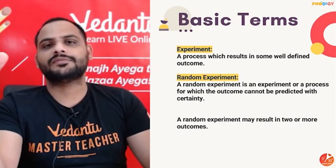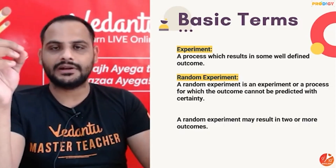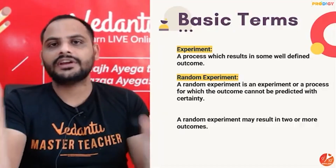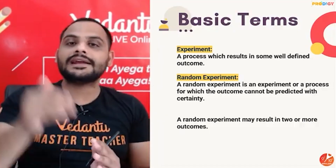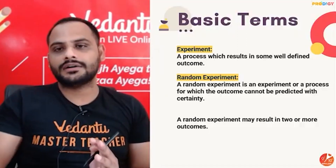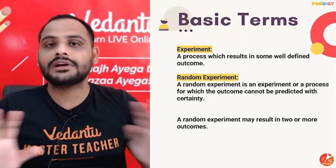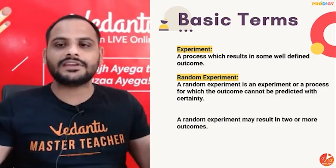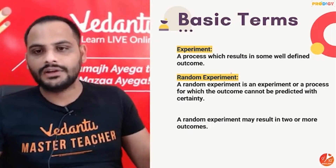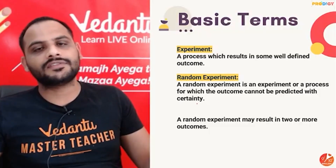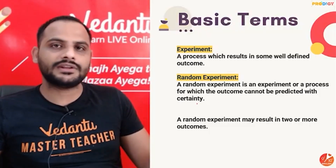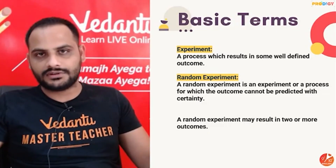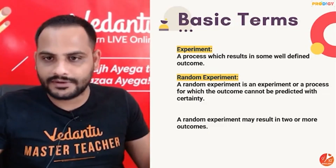Out of those experiments, some experiments are random experiments. An experiment is called random if you cannot predict the outcome which is going to happen — you cannot predict with surety what is definitely going to happen. For example, when I toss a coin I can never be sure it is going to be head only or tail only when the coin is fair.